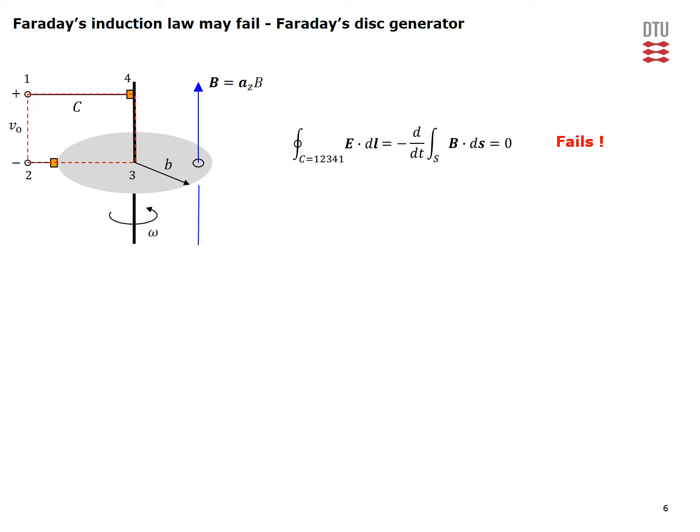When Faraday's induction law fails, we turn to a fundamental law. Since this is a moving circuit in a static field, the relevant law is based on magnetic force, where the induced electric field is given by the cross product of the linear velocity U of the disk and the background field B. Only the part of the circuit moving in a direction not parallel to B — cutting the magnetic flux — contributes to the integral. That is the path segment indicated on the figure, giving a contribution from path point 2 to 3.